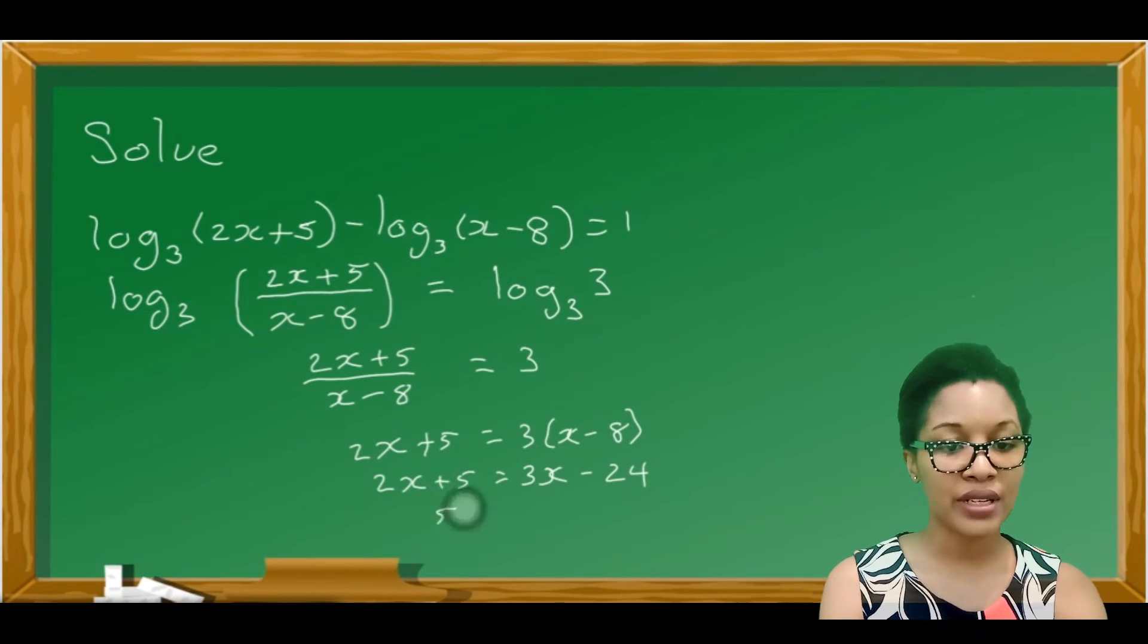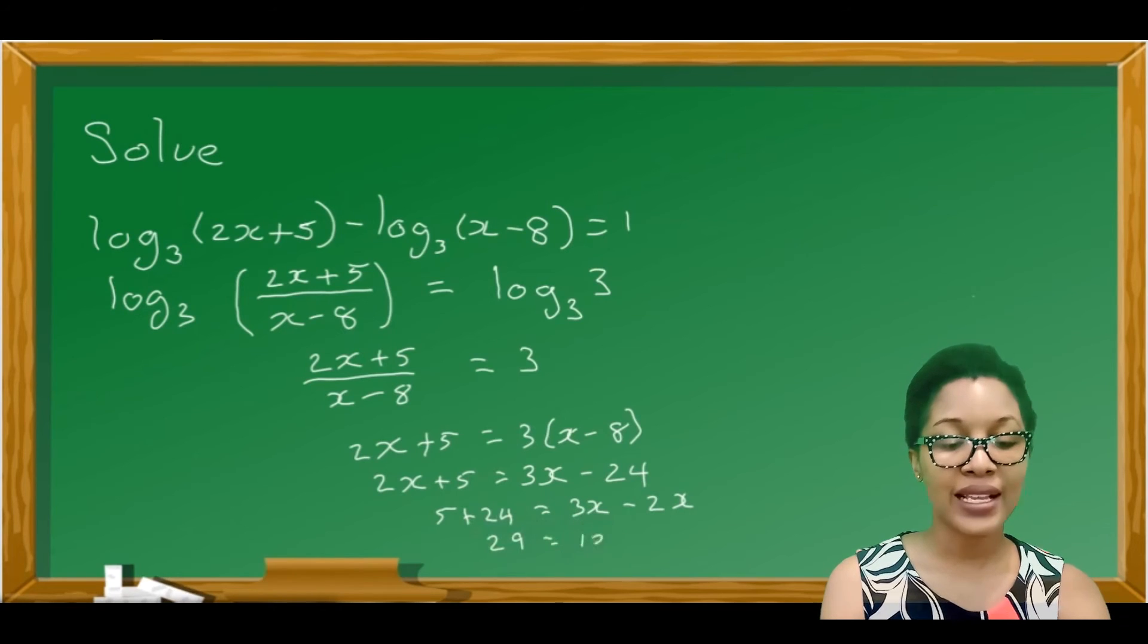We put all the variables on one side, all the numbers on the other side. So 5 plus 24 is equal to 3x minus 2x. 5 plus 24 is 29, which is equal to 1x. So x is equal to 29.